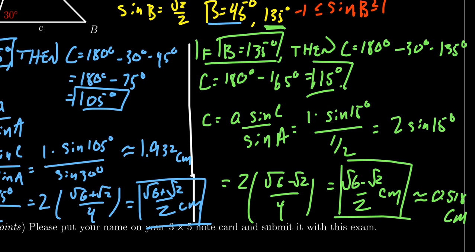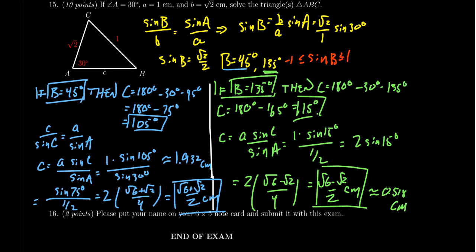And therefore, we found two solutions here. We found two solutions to this one, two triangles that work. One where B was 45 and C was 105, and one where B was 135 and C was 15.